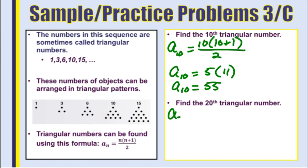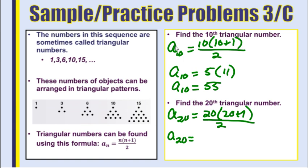To find the twentieth triangular number, put 20 in for n: 20 times 21 divided by 2. Simplifying, 20 divided by 2 is 10, and 10 times 21 equals 210. That concludes our lesson on using formulas for sequences.